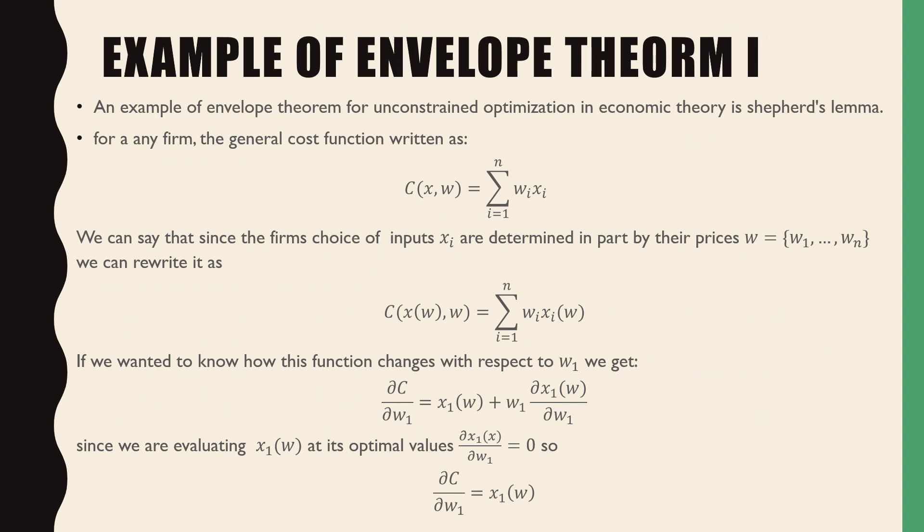So an example of envelope theorem for unconstrained optimization in economic theory is Shepard's Lemma. For any firm, the general cost function is written as the summation of w_i x_i, where i goes from 1 to n. We can say that since the firm's choice of inputs x_i are determined in part by their prices w, where w is the vector of input prices.